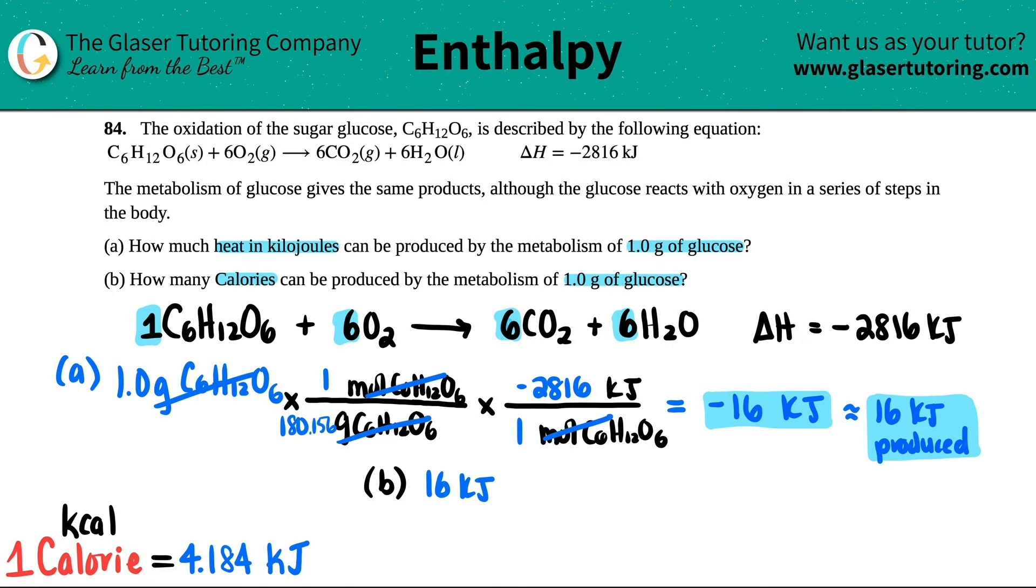Okay. So since they gave me a capital C, I know that I'm dealing with kilocalories and one kilocalorie or one capital C calorie equals 4.184 kilojoules. So just another ratio times by ratio kilojoules on the bottom, maybe I'll just put capital Cal, right? Capital C Cal.